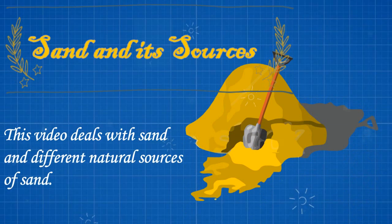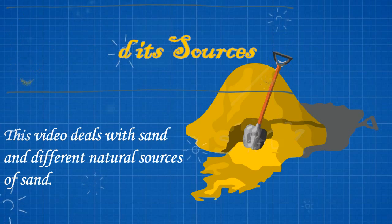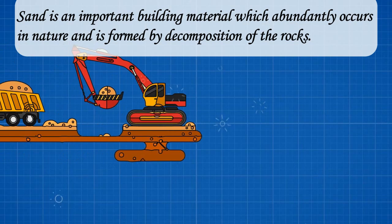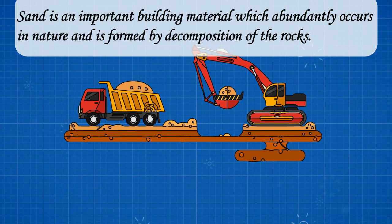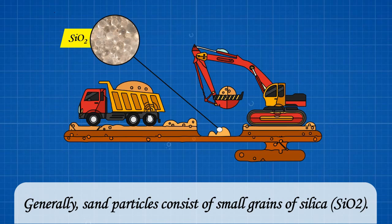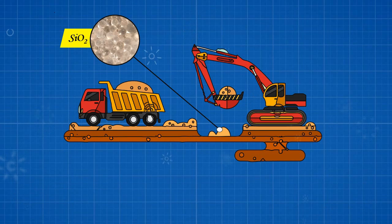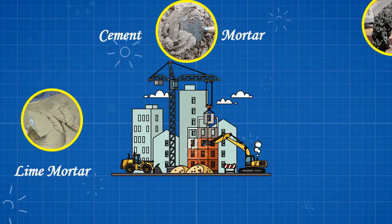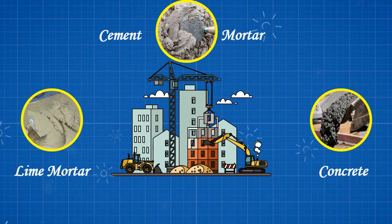Sand and its sources. This video deals with sand and different natural sources of sand. Sand is an important building material which abundantly occurs in nature and is formed by decomposition of the rocks. Sand particles consist of small grains of silica, that is SiO₂. Sand is the chief ingredient in lime mortar, cement mortar, concrete, etc.